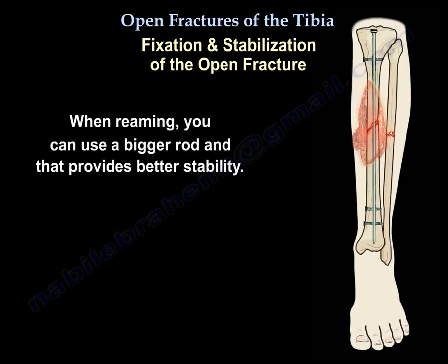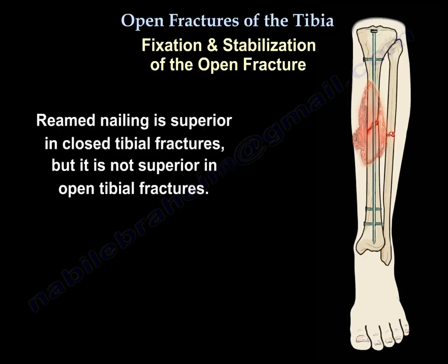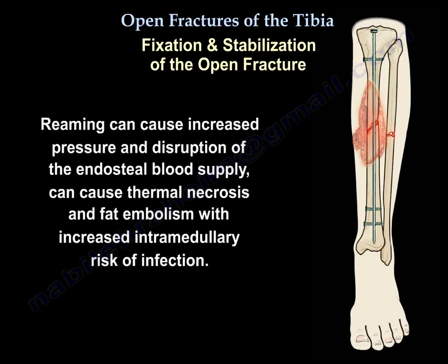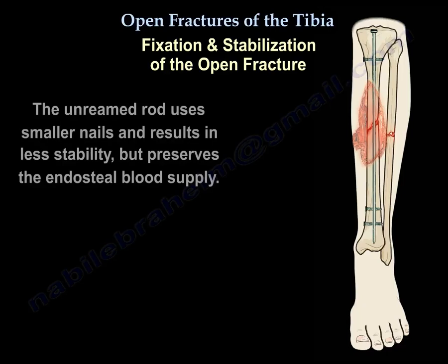When reaming, you can use a bigger rod, which provides better stability. Reamed nailing is superior in closed tibial fractures but not in open tibial fractures. Reaming can cause increased intramedullary pressure, disruption of the endosteal blood supply, thermal necrosis, fat embolism, and increased risk of infection. The unreamed rod uses smaller nails, resulting in less stability but preserving the endosteal blood supply.